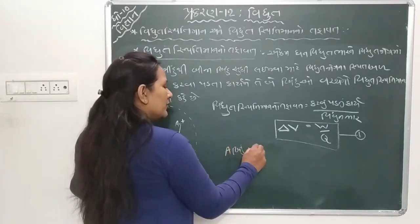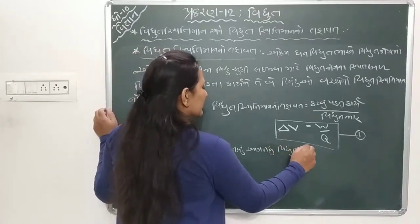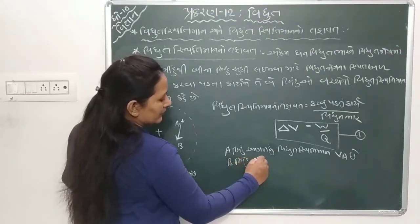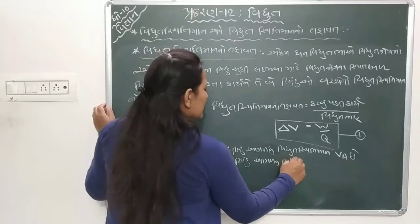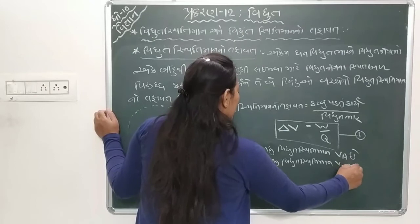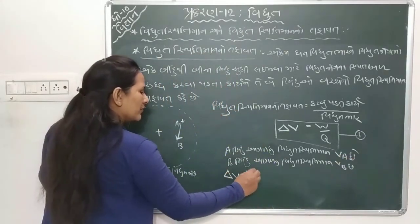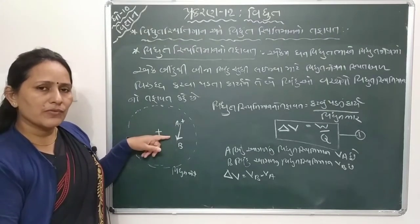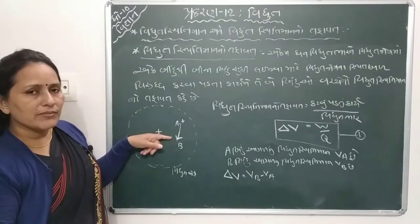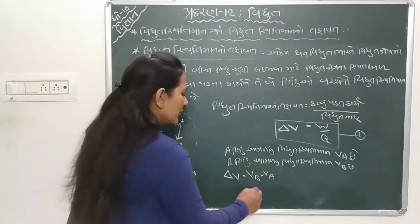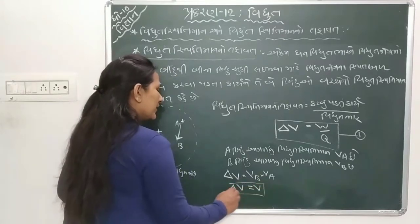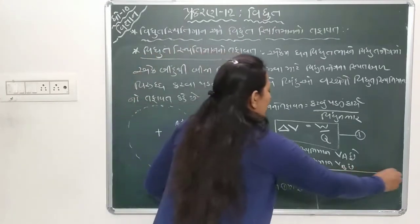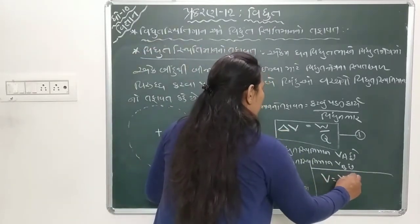Vidyut kshetra ma A bindu agalnu Vidyut Sthitiman VA chhe ane B bindu agalnu Vidyut Sthitiman VB chhe, to Vidyut Sthitiman no tafavat Delta V = VB minus VA thaay. Delta V ni jagaye V mukho to V = W bhagya Q - aa sutra aave.